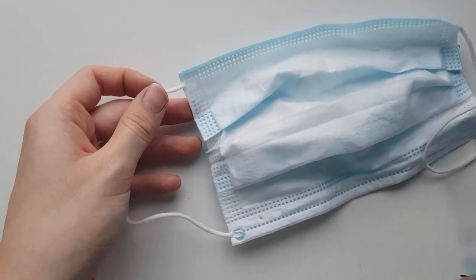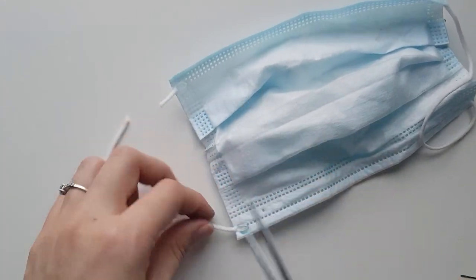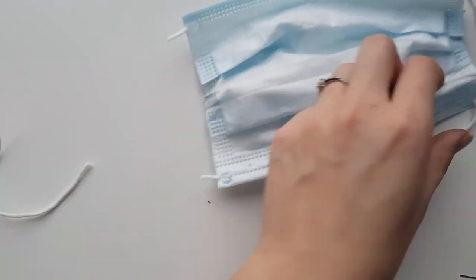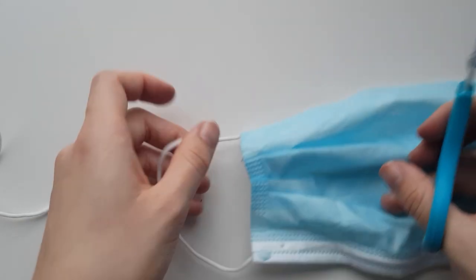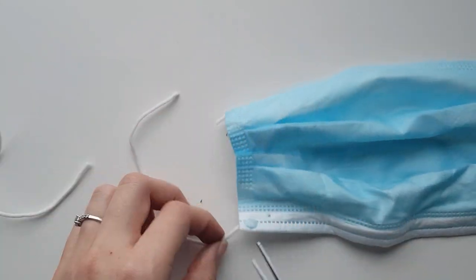This is totally optional if you already have elastic, but take a used mask and chop off the elastic before throwing it away. This is not only good for the environment as it can get caught on animals, but it also helps repurpose wasted elastic.